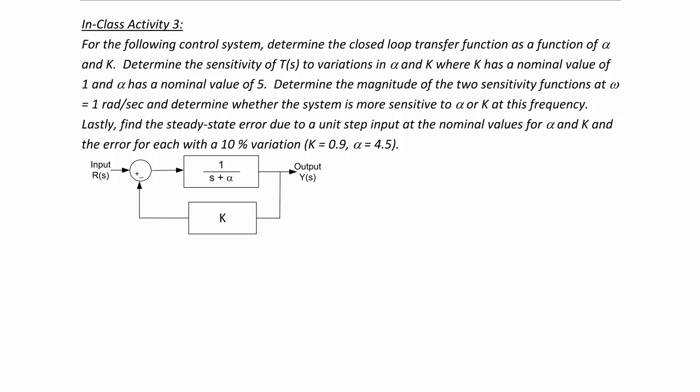In-class activity 3: for the following control system, determine the closed loop transfer function as a function of alpha and k, and determine the sensitivity of T(S) to variations in alpha and k, where k has a nominal value of 1 and alpha has a nominal value of 5. Determine the magnitude of the sensitivity functions at omega equal to 1 radian per second and determine whether the system is more sensitive to alpha or k. Lastly, find the steady state error due to a unit step input at the nominal values, and for a 10% variation where k equals 0.9 and alpha equals 4.5.